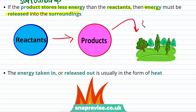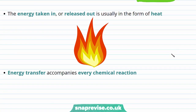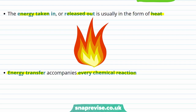The reactants form the products, and the products release energy. In chemical reactions, this energy that we're talking about, which is taken in or released, is usually in the form of heat, meaning that we either cool down or heat up the surroundings. An important thing to remember is that energy transfer will accompany every chemical reaction. We're now going to look at each of the two examples in a bit more detail.